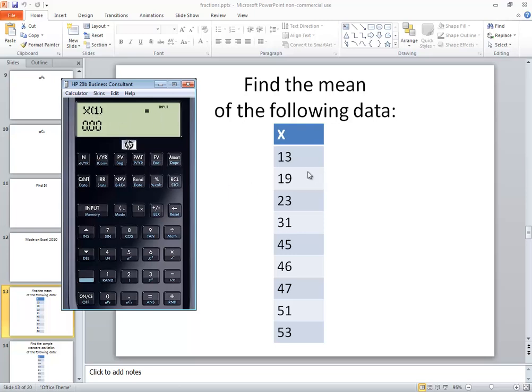Now it comes up and says X1, so I'll put 13 in. We'll push the input. And that goes to Y1. If we're only doing X values, you can do a down arrow to go to the X2. So I'll put 19 in. Input. Down arrow. 23. Input. Down arrow. And then 31.